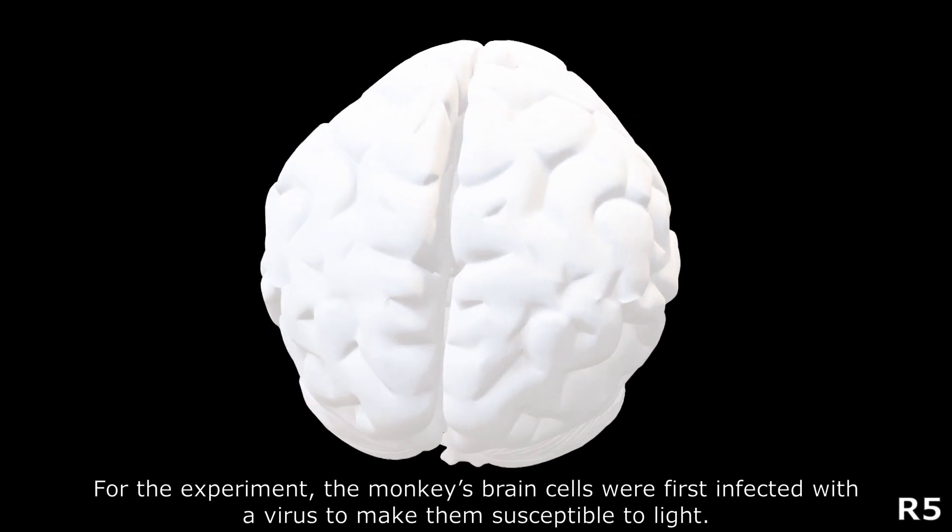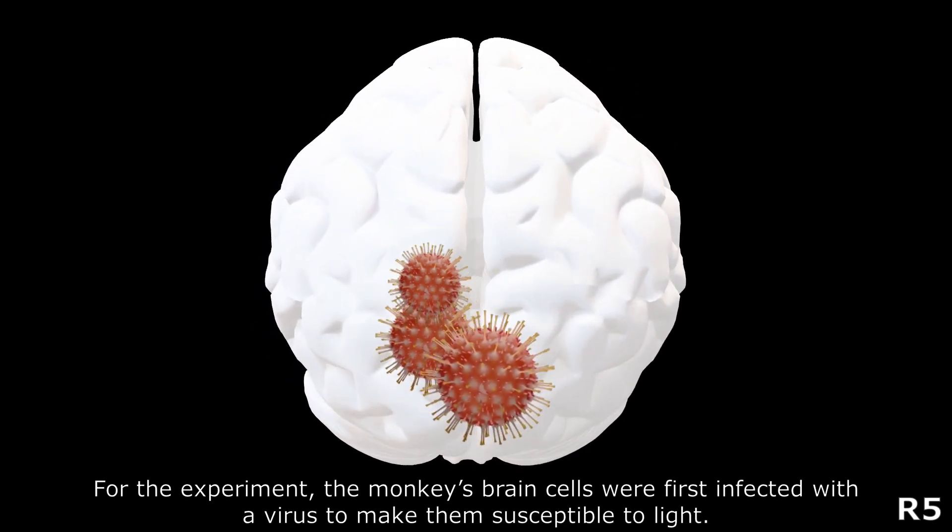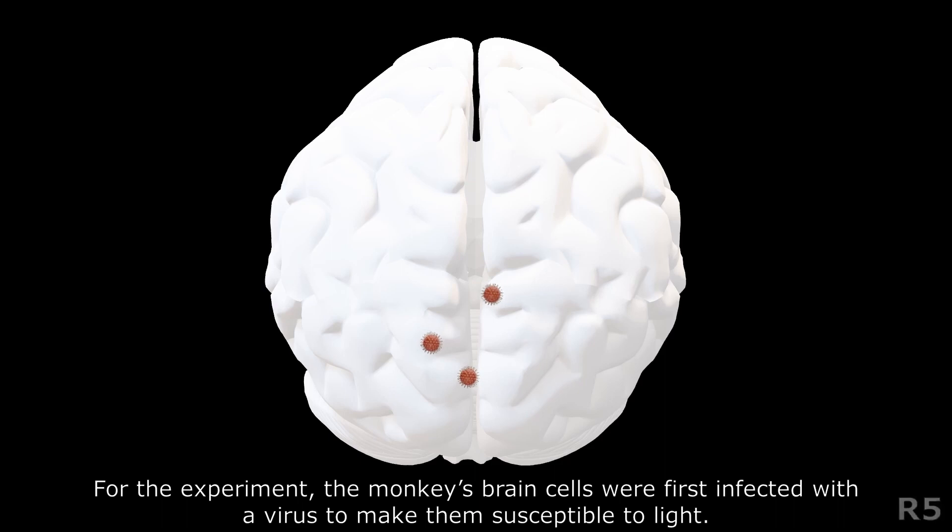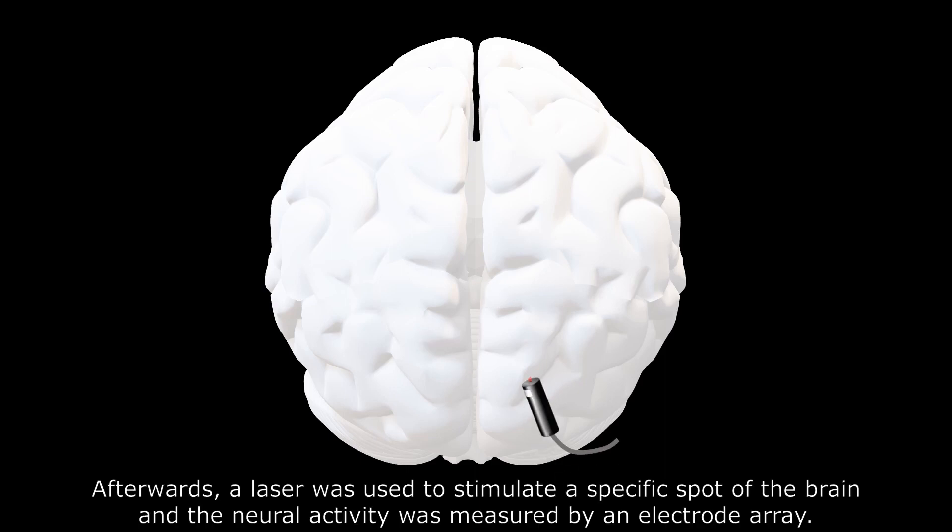For the experiment, the monkey's brain cells were first infected with a virus that makes them susceptible to light. Afterwards, a laser was used to stimulate a specific spot of the brain and the neural activity was measured by an electrode array.